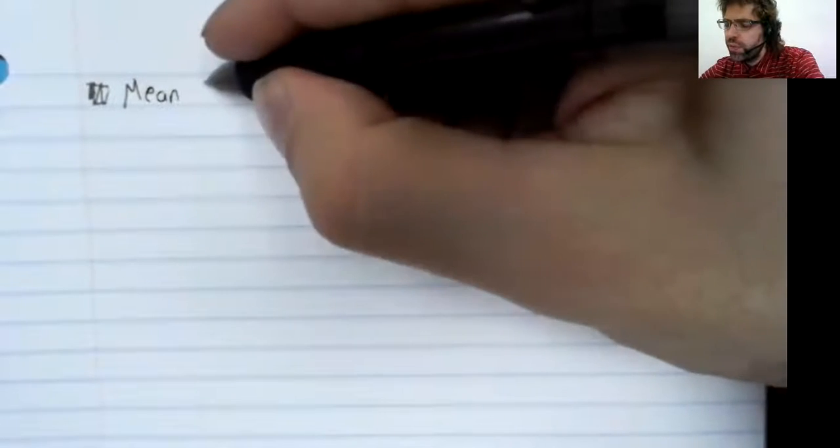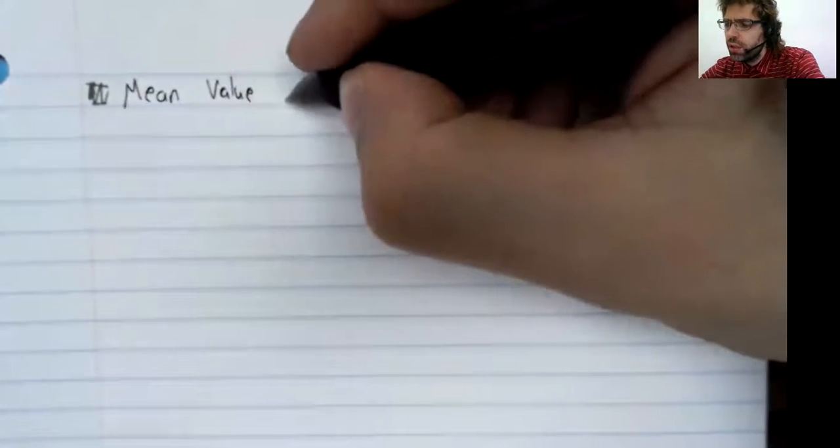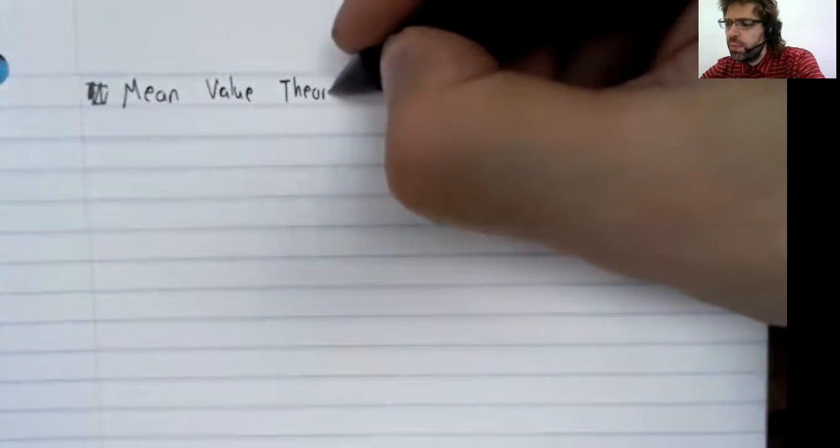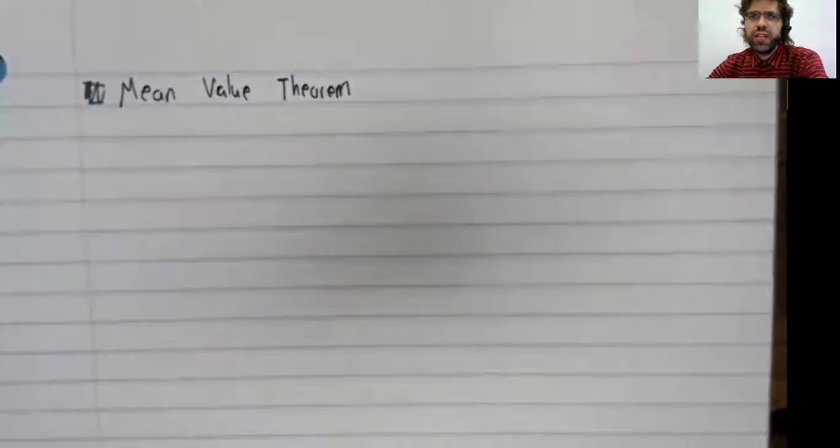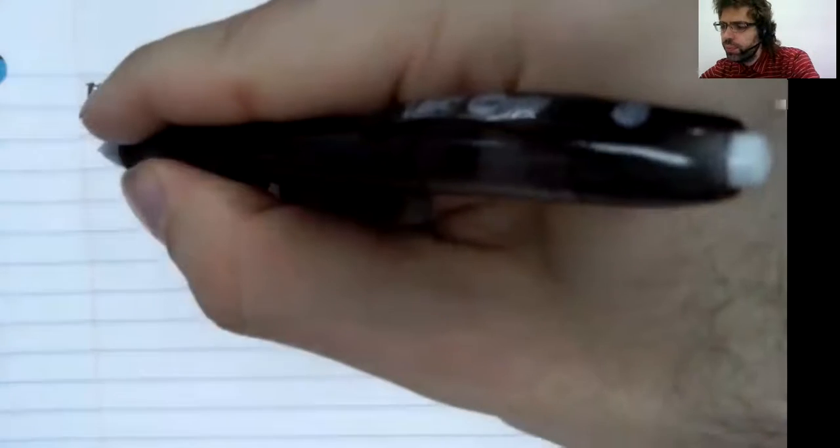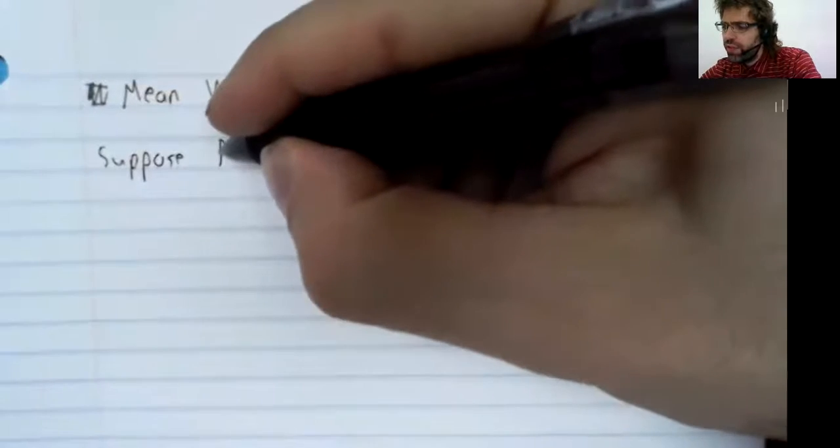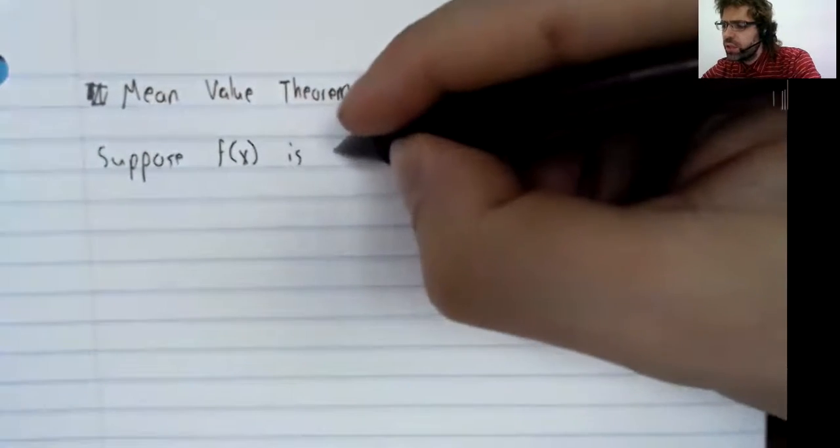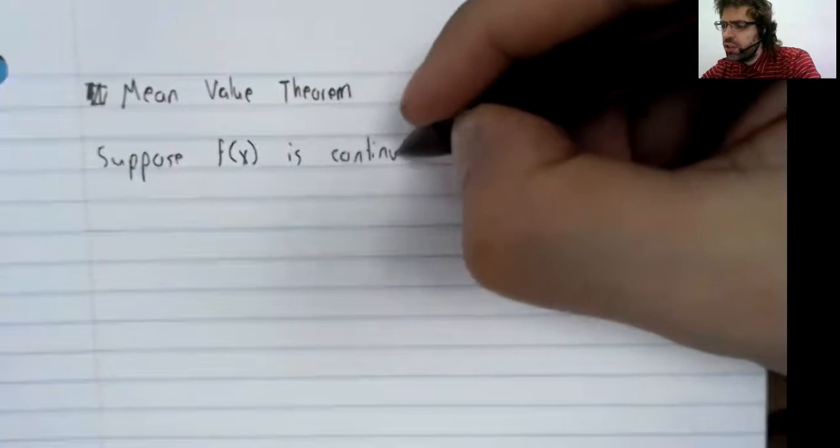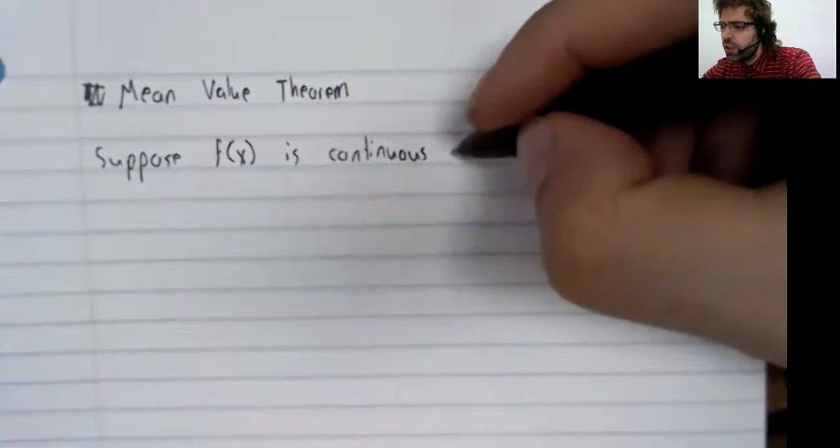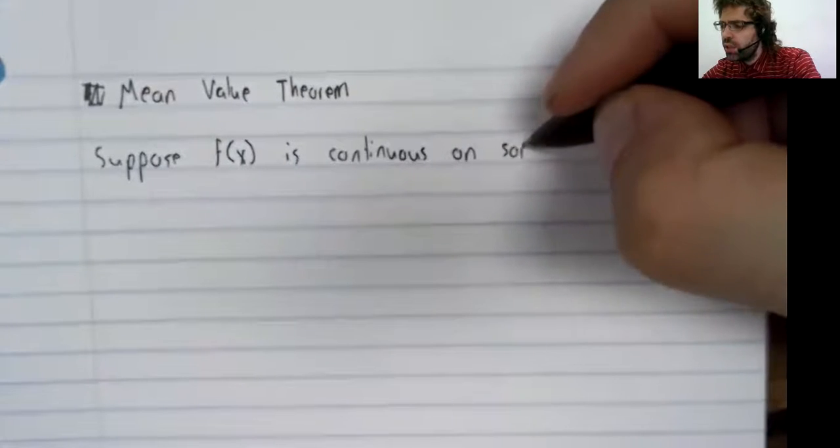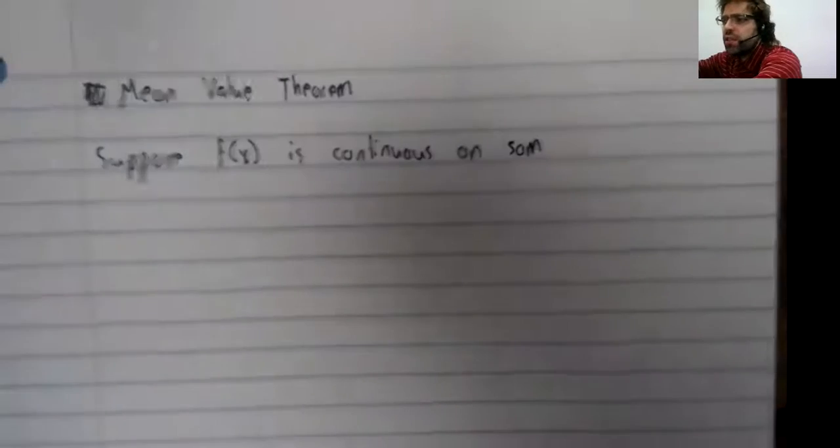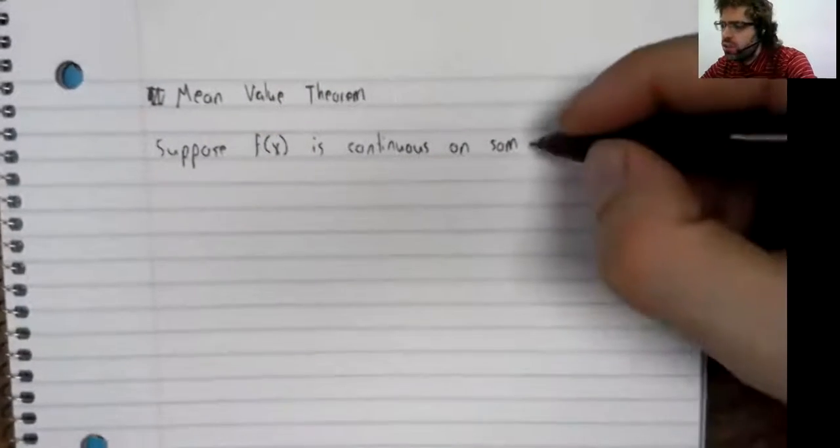The Mean Value Theorem says the following: Suppose a function f(x) is continuous on some interval.